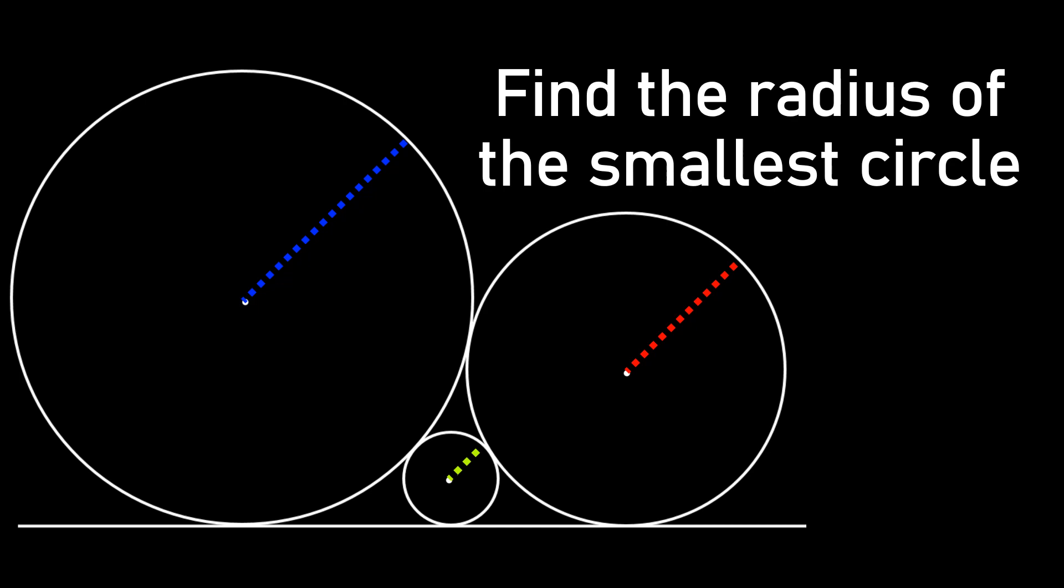Hello everybody, welcome back to my channel. This is Dave. Today we're going to be looking at a very classic geometry problem from Japan. The goal of this problem is to find the radius of the smallest circle, given that all three circles are tangent to each other and tangent to a common baseline, as we see in the problem. In other words, given this information, if we know the blue and the red radius, what is the radius of the smallest circle.